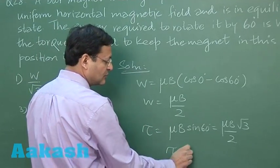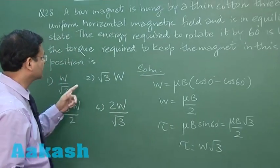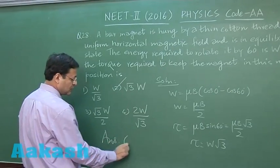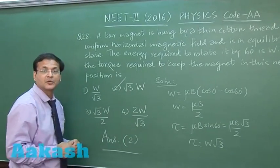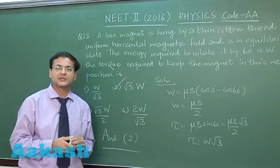Substitute μB/2 as W. You'll get torque equals W√3. The answer is W√3, which is the second option. I'll be marking answer 2 for question 28. Now let's switch to question 29.